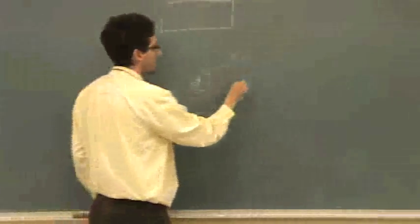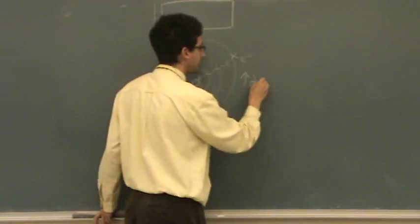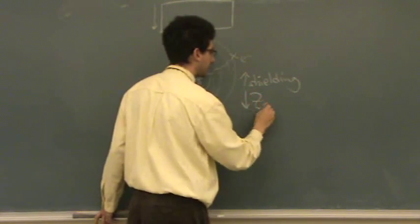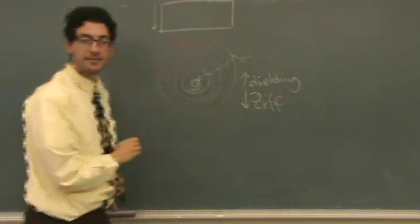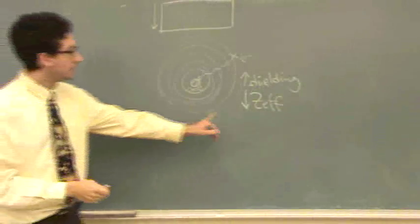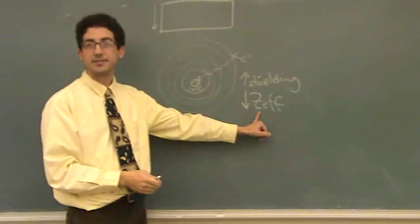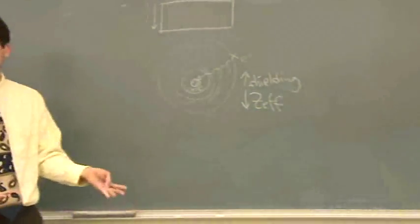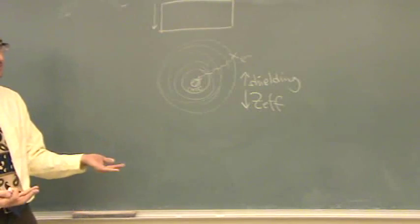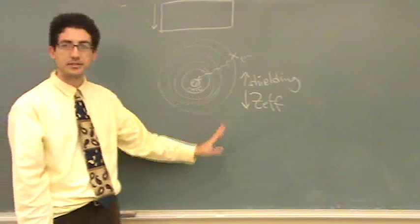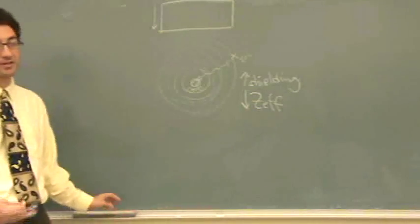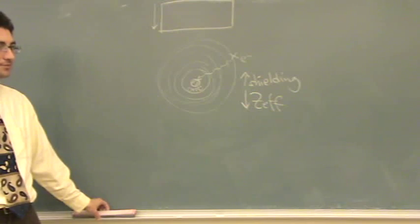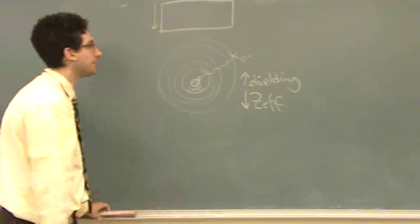Also, as shielding, as you increase shielding, can you see how you decrease Z-effective? The opposites. Meaning, it sees less and less protons. So the Z, the number of protons, is smaller. Effectively, how many protons you see is a smaller number. So those are all opposites. So the bigger it's getting, the smaller Z effectiveness. The effective nuclear charge, what those electrons see is smaller.